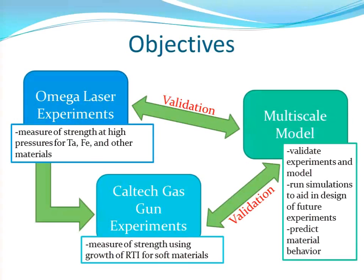For the gas gun experiments, we're trying to show that you really can correlate strength to the measure of these instabilities. The multiscale model is used to validate the experiments, to help design the Omega and gas gun experiments, and also to predict material behavior — which, as John mentioned earlier today, is something very interesting.